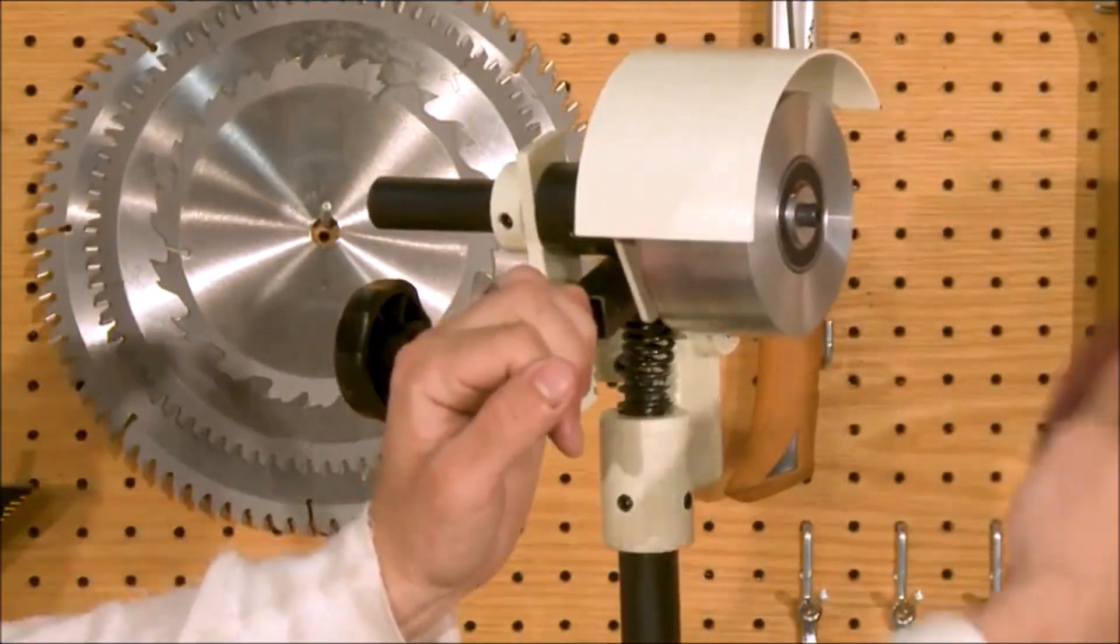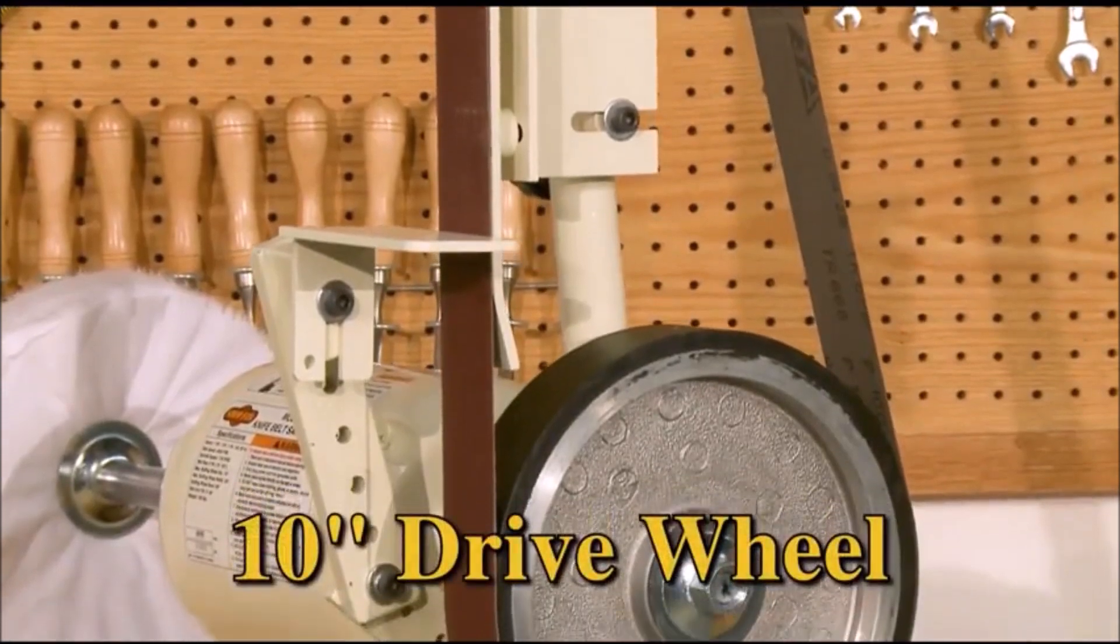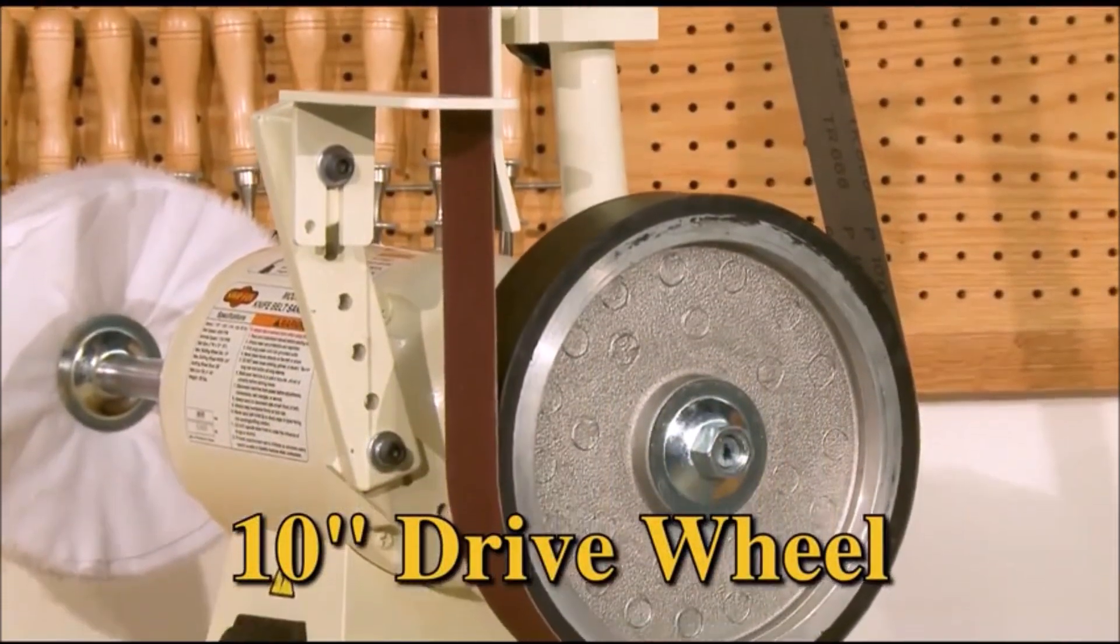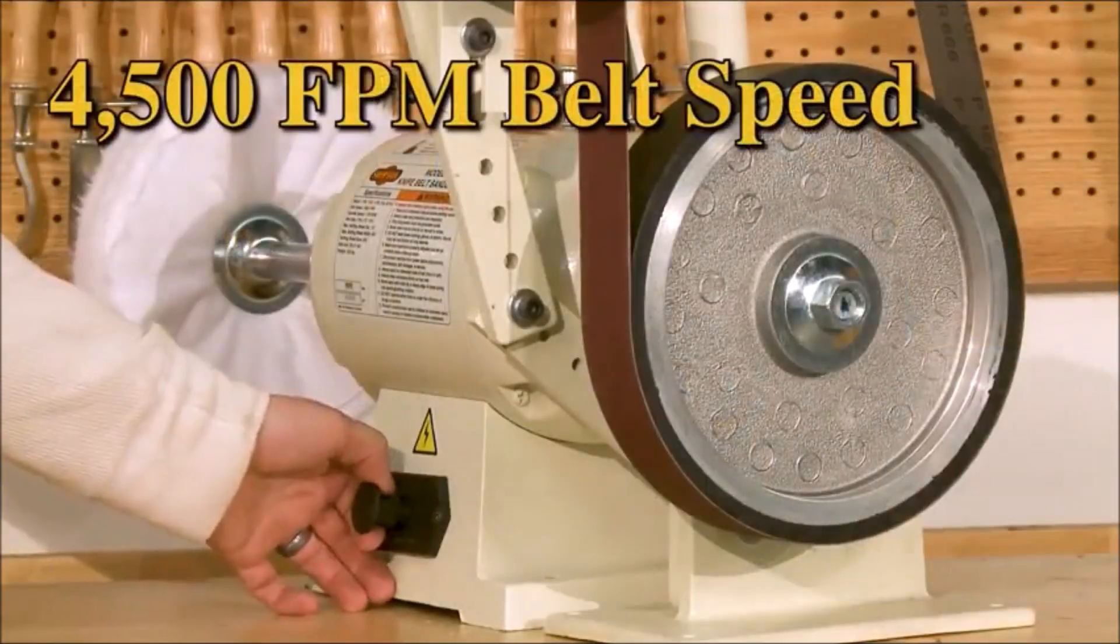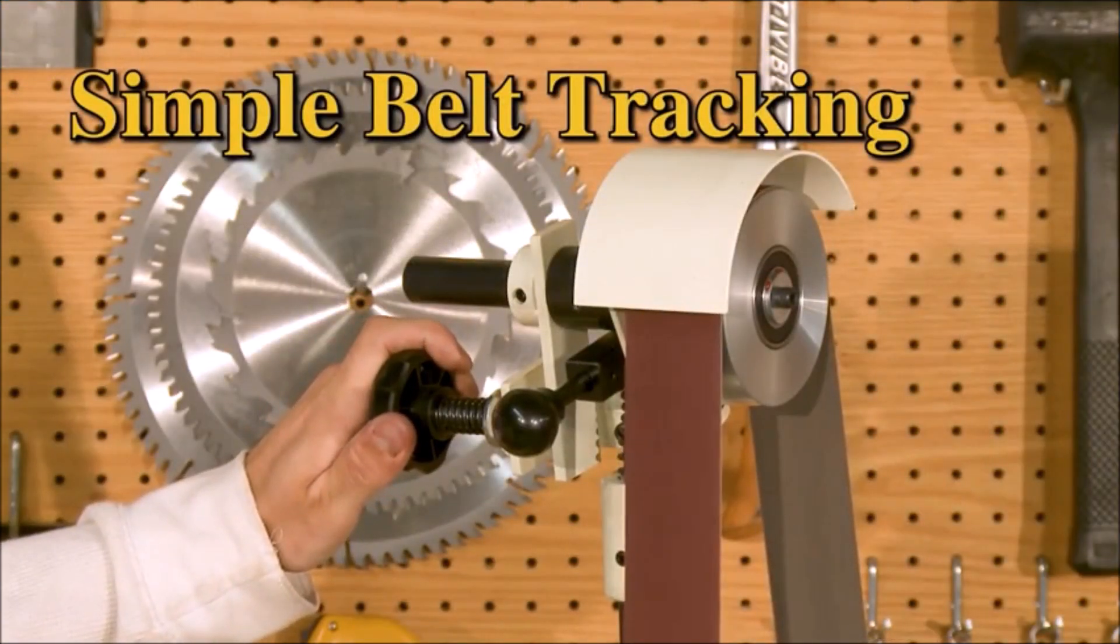The sanding belt can be utilized along the platen, above the platen for free-forming, or against the 10-inch rubber-faced drive wheel. This knife belt sander, buffer is ideal for sharpening extra-long lathe turning gouges and chisels.